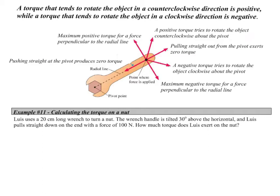Our torque equation gives only the magnitude, but torque, like a force component, has a sign. A torque that rotates in a counterclockwise direction is positive, while a torque that rotates an object clockwise is negative. Once we determine our pivot point, any force applied along the radial line or lever arm results in zero torque. Any force causing counterclockwise rotation is a positive torque; any force causing clockwise rotation is a negative torque.